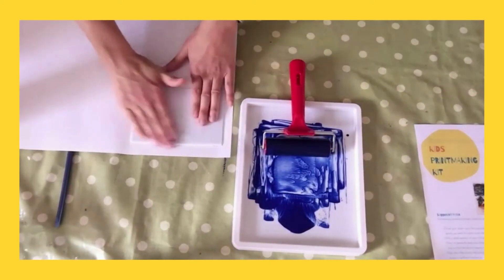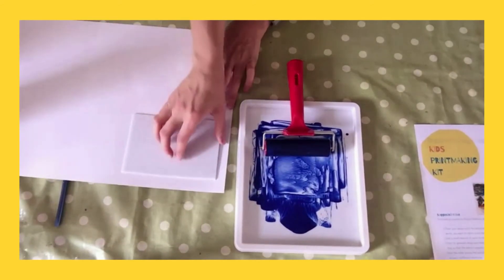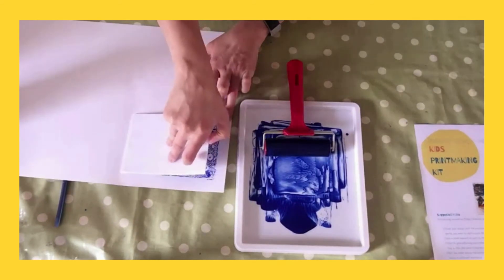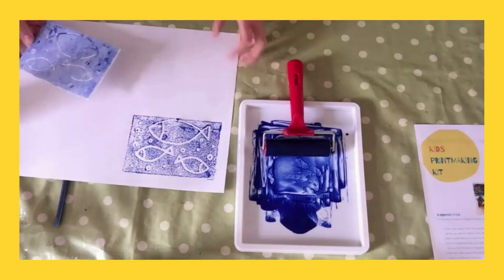Okay. And then very gently start from one edge of the polystyrene sheet and peel back away from the paper and reveal your image.